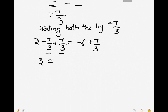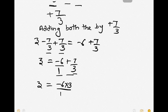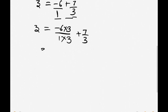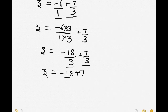Minus 7 by 3 plus 7 by 3 cancels and becomes 0, so we are left with z is equal to minus 6 plus 7 by 3. Since the denominator of minus 6 is considered as 1, we need to multiply both numerator and denominator of 6 by 3 to make the denominators equal. So minus 6 into 3 upon 1 into 3, plus 7 by 3. We know 6 times 3 is 18, so we write minus 18 upon 3 plus 7 by 3.